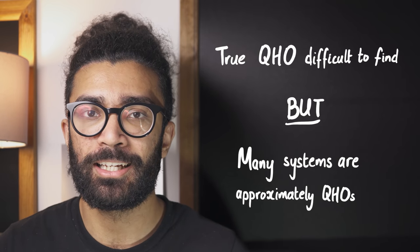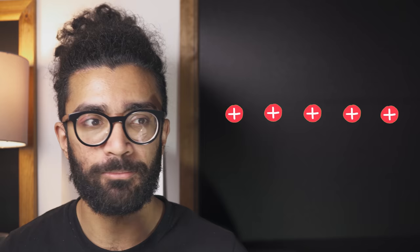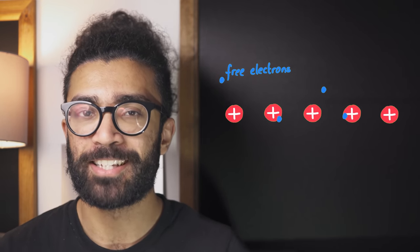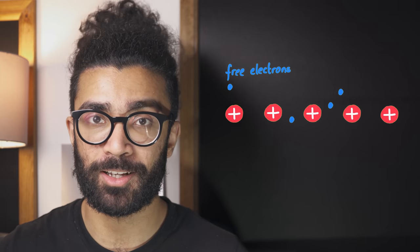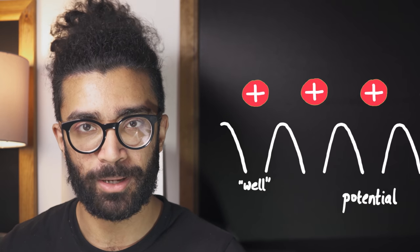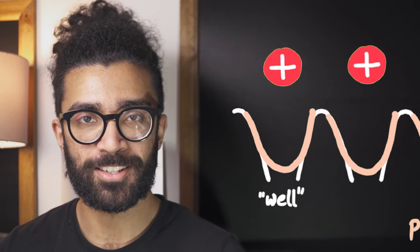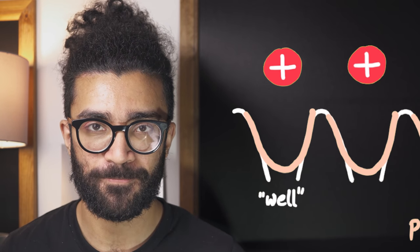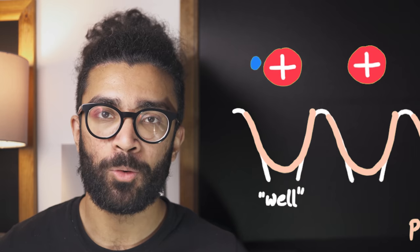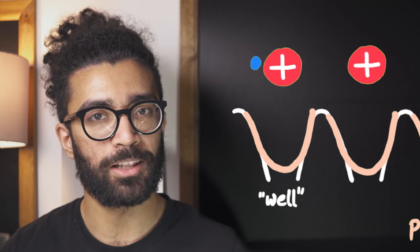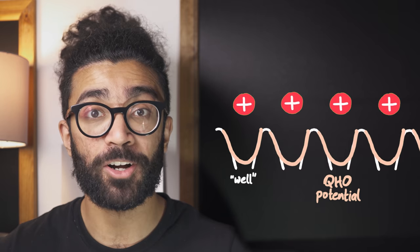For example, we could be studying a single row of positive ions inside a metal. A metal consists of positive ions, generally thought to be stationary in position, with a whole bunch of free electrons surrounding these ions, known as the sea of electrons. We can take a look at the potential energy an electron should be experiencing as a result of this row of ions — it looks something like this. Each of these little wells can basically be approximated as a quantum harmonic oscillator, which means we can use the study of quantum harmonic oscillators to predict how electrons should behave in each one of these so-called potential wells. Essentially, if an electron were found here, we could find out something about the energy of that electron in this region of space.